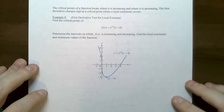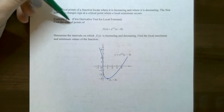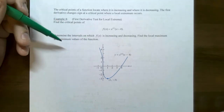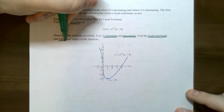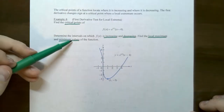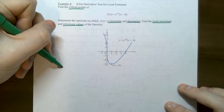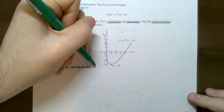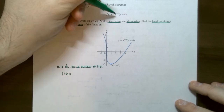Let's try example four. The critical points of the function can locate where the function is increasing or decreasing on either side. Find the critical points for the function x to the one-third times x minus four, determine where the function is increasing and decreasing, and also determine where there is a local maximum and local minimum value. These refer to the y values, not the x's. Let's start by finding the critical numbers of f of x — we need to use the product rule to take the derivative: first function times the derivative of the second, one, plus the second function x minus four times the derivative of the first, one-third x to the negative two-thirds.